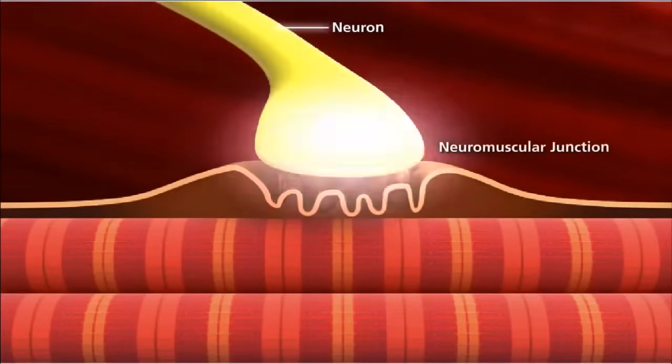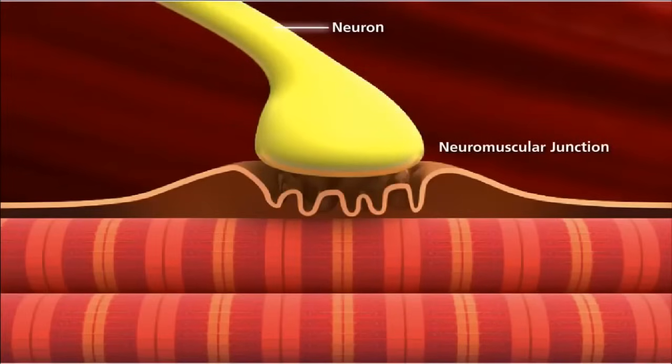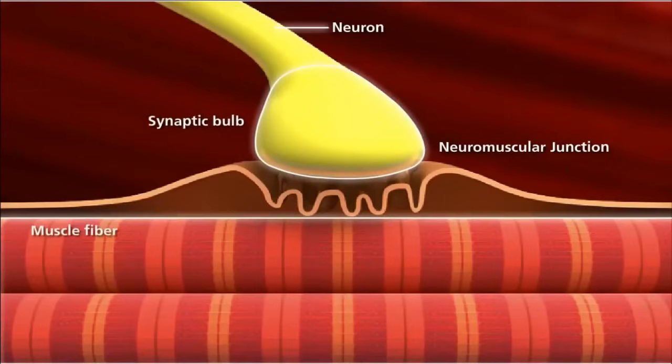A neuromuscular junction is the site of the signal exchange. This is where the synaptic bulb of an axon terminal and muscle fiber connect.